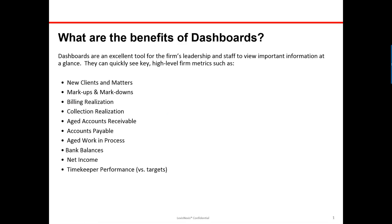The Jurisuite dashboards are a very good tool to give your leadership and staff the ability to view very important information at a quick glance. You can see high-level key firm metrics such as new clients and matters, markups and markdowns, billing realization, collection realization, aged accounts receivable, accounts payable, aged work in process, bank balances, net income as it relates to revenue and expenses, and timekeeper performance versus targets if you have a timekeeper budget set up.